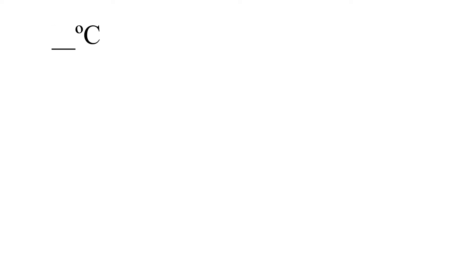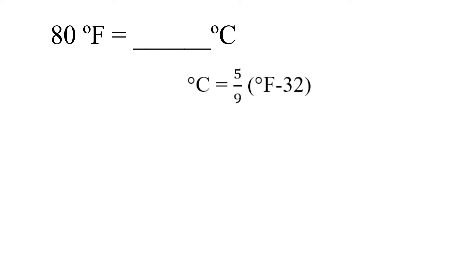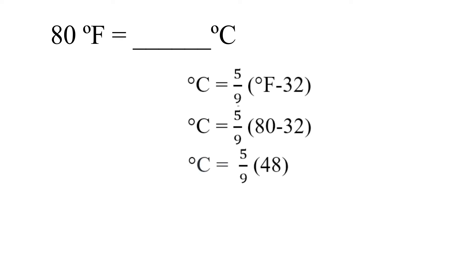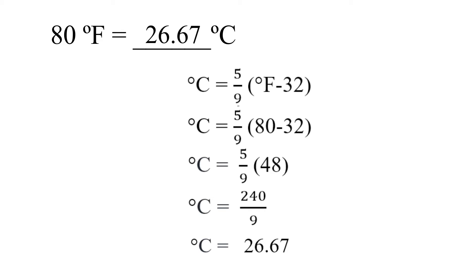A Fahrenheit temperature is given. To convert it to the Celsius scale, use this formula. Substitute 80 for degrees Fahrenheit and subtract. The difference of 80 and 32 is 48. Get the product of 5 and 48, which is 240. Divide 240 by 9 and it gives us 26.67. The temperature in New York in degrees Celsius is 26.67.